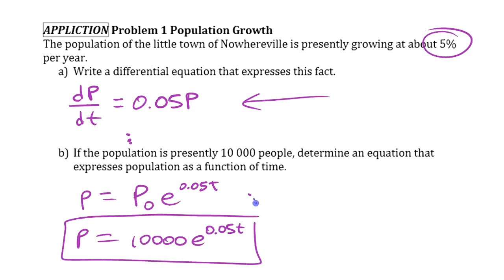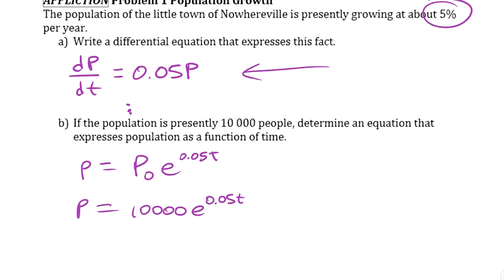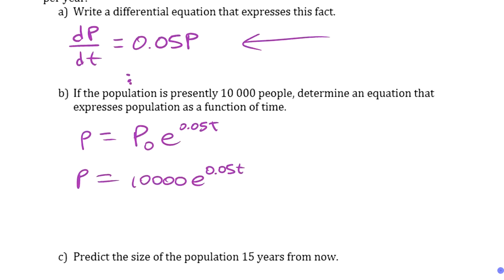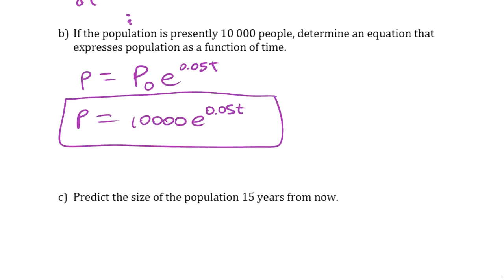I obviously skipped all the steps in between there because I've done it — if you look at the previous video, we can just use that shortcut. That's a function you can use for population as it relates to time; it's the solution of that differential equation.